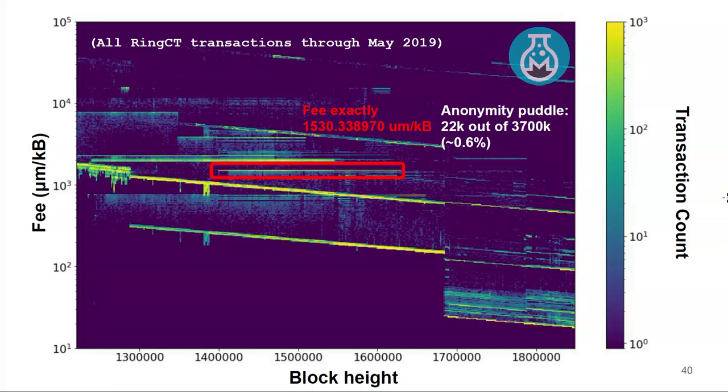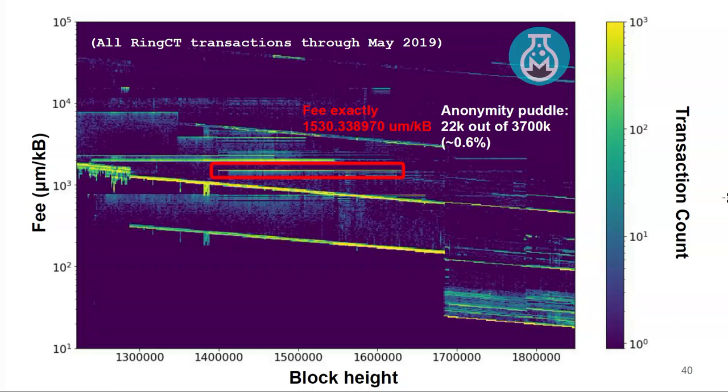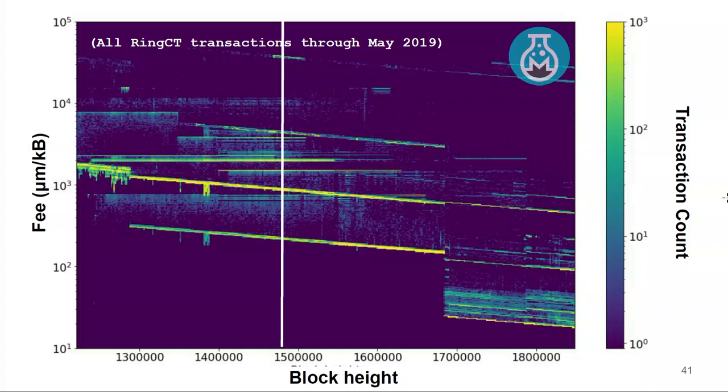We also see people who have hard-coded software with exact relative fees. Here's another anonymity puddle where the fee was specified out to about eight significant figures, which is a bit overkill. These are 22,000 transactions out of 3.7 million — a very small anonymity puddle. If you start at the bottom of that white line and count up to the top, you pass through at least four or five different anonymity pools: the default ones, the static ones, some super high ones, and all these outliers. This is because we have very high-resolution, many-significant-figure fees that enable this information leakage.